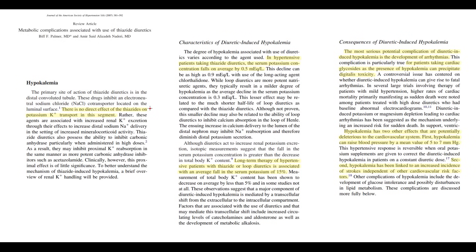Thiazides cause hypokalemia by an indirect mechanism. Statistically, in patients on thiazide diuretics, blood potassium level decreases by 0.5 mEq per litre. Long-term consumption of thiazides and loop diuretics can cause a 15% decrease in potassium level, which is quite significant. The most serious potential complication of hypokalemia is the development of arrhythmias. We should be especially careful with thiazides in patients on cardiac glycosides, because they can precipitate digitalis toxicity. Additionally, hypokalemia can cause a mild increase in blood pressure, and statistically patients with hypokalemia have an increased incidence of strokes.